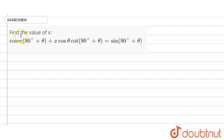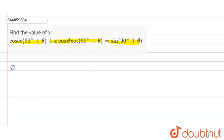Hello everyone. Here the question is: find the value of x. The expression is x cos(90° + θ) + x cos θ · cot(90° + θ) = sin(90° + θ). Now let's come to our solution.